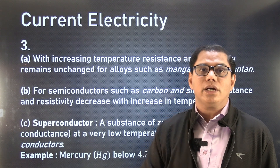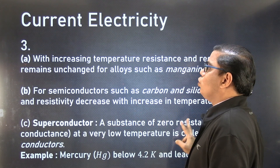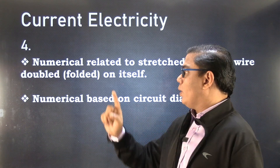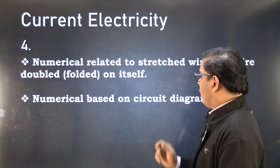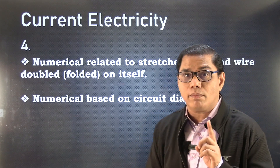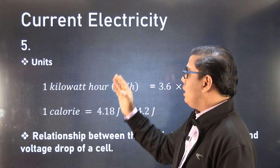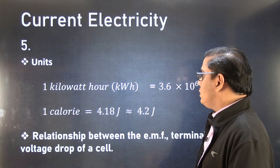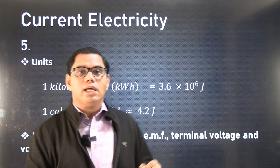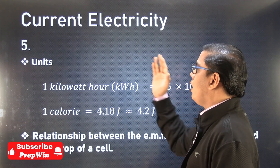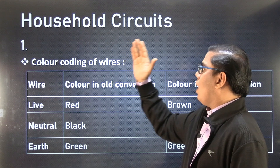Important topics include the effect of temperature on resistance, and the relationship between resistance and resistivity. Points related to semiconductors and superconductors are also very important. Numericals related to stretched wire and wire doubled on itself or folded wire are key, as are numericals based on circuit diagrams especially those involving EMF. Next is units of electric energy and electric power, and the relationship between EMF, terminal voltage, and voltage drop — very important for your examination.